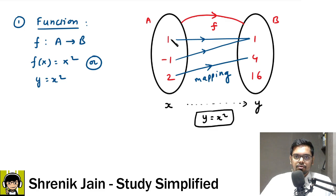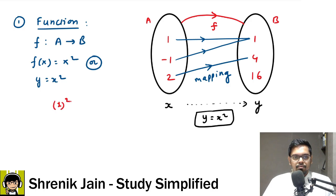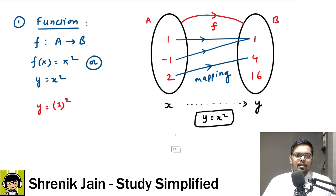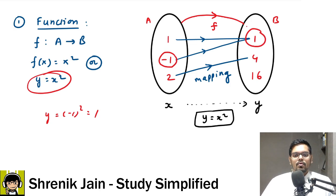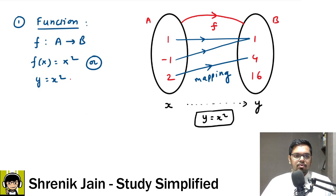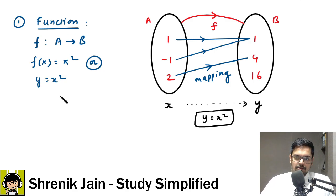Set A resembles inputs, set B resembles outputs. If x = 1, output is 1² = 1, so input 1 maps to output 1. If x = −1, output is (−1)² = 1, so input −1 maps to output 1. If x = 2, output is 2² = 4, so input 2 maps to output 4. This is the same mapping concept as in relations, but now with a condition.